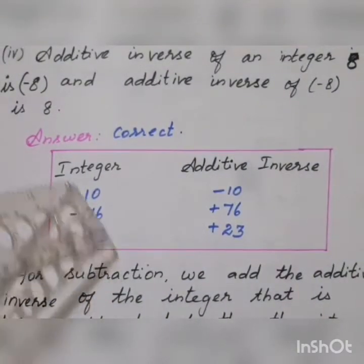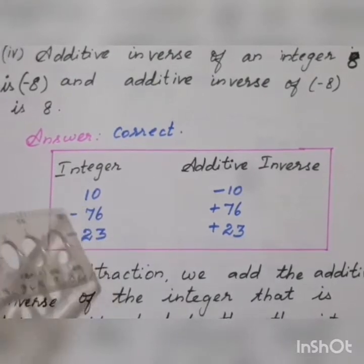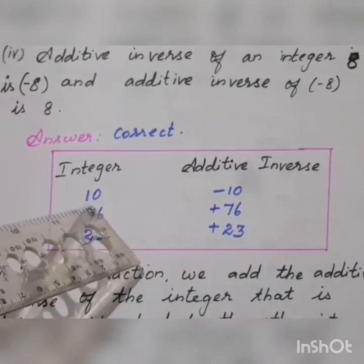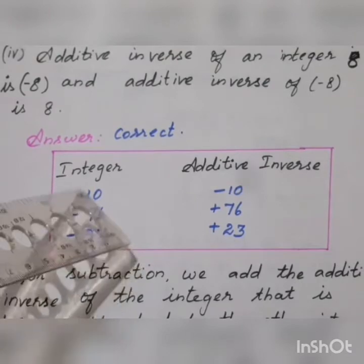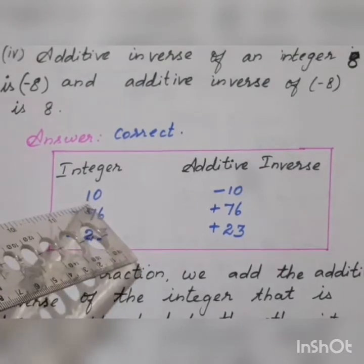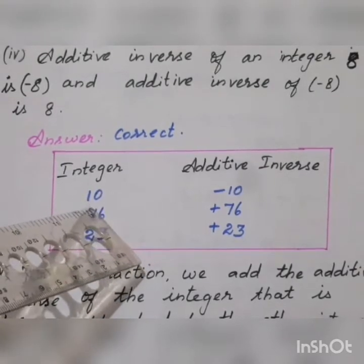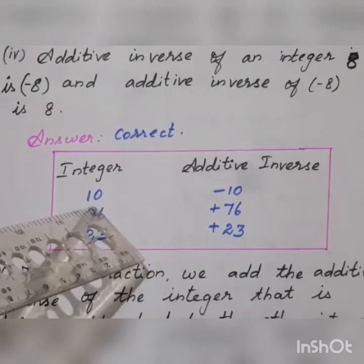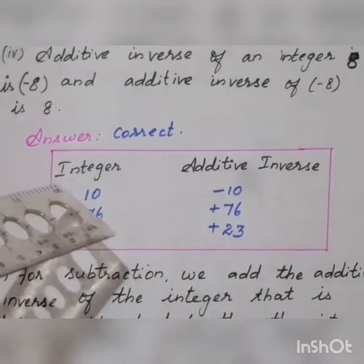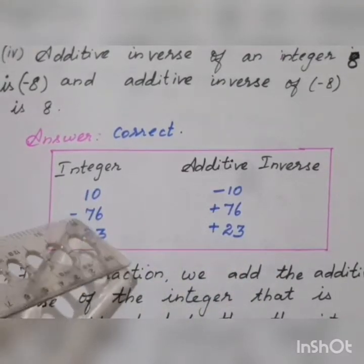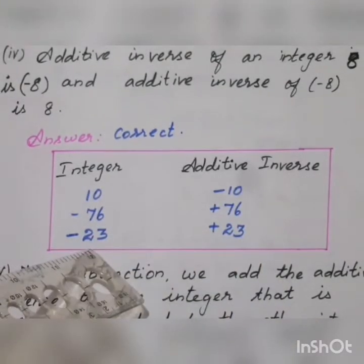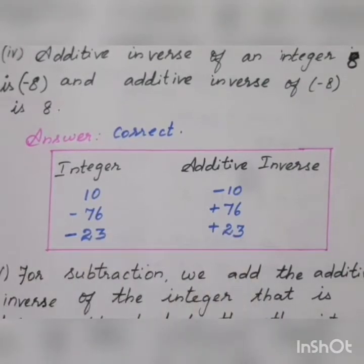Some more examples. Here is the list of integers and their additive inverses. 10 means plus 10 is an integer. The additive inverse of plus 10 is minus 10. And minus 76 — additive inverse of minus 76 is plus 76. Additive inverse of minus 23 is plus 23.